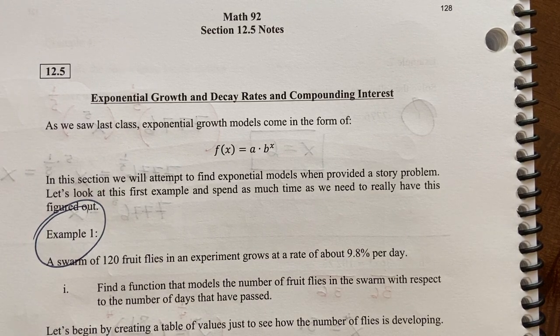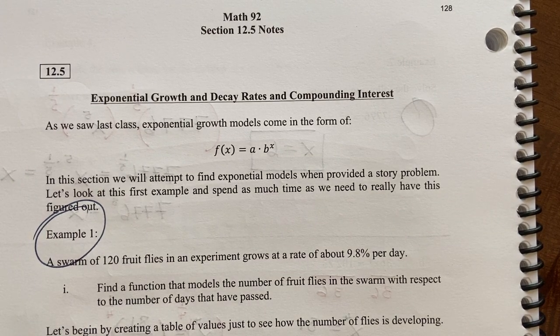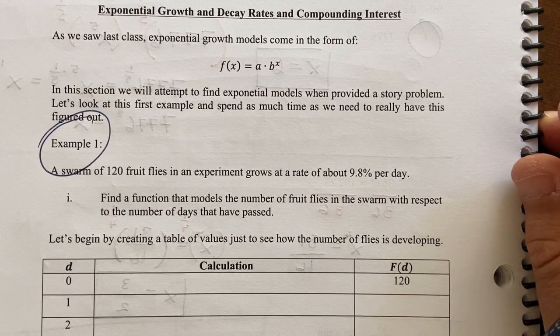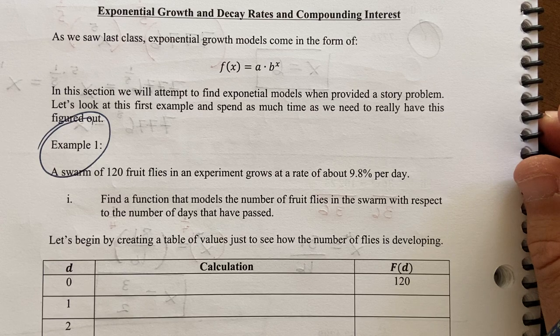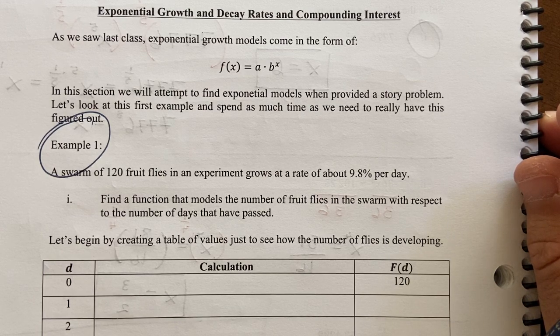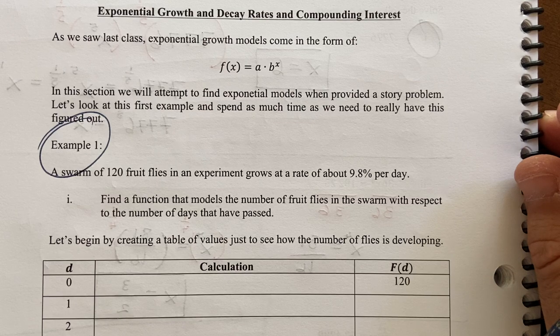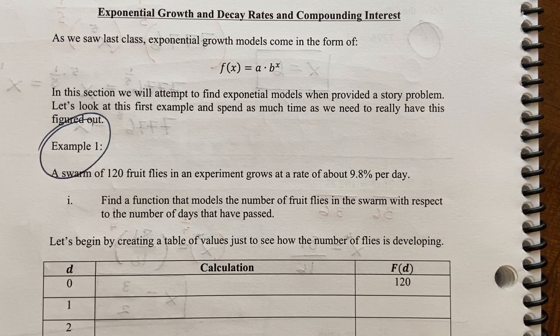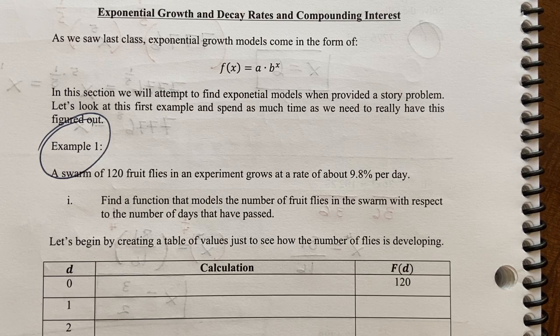So something growing at 9.8% per day might be a little bit more realistic than just the swarm doubling every day. I'm reading example one here - a swarm of 120 fruit flies in an experiment grows at a rate of about 9.8% per day. Part one wants us to find a function that models the number of fruit flies with respect to the number of days that have passed.